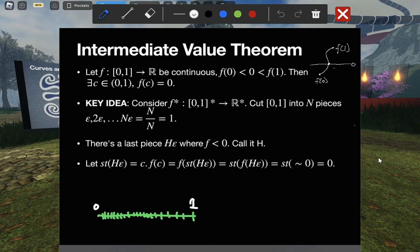then at some point there must be some point c where f is equal to zero. But we're going to do this in kind of a wild way, radically elementary way.